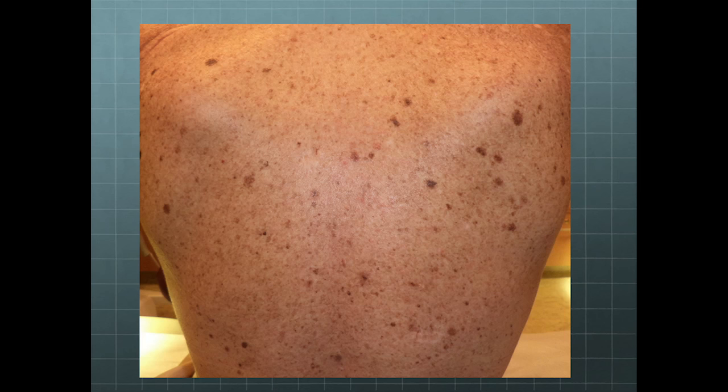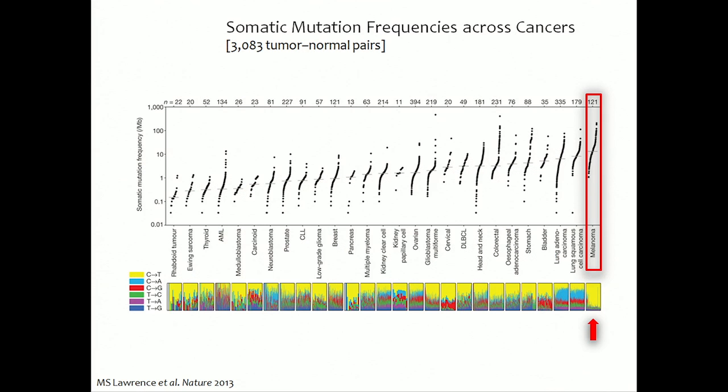If you have a major germline mutation where the genes coding for these critical repair proteins are non-functional, you keep adding UV damage on top of another. This is a patient of mine — an adult, 50 years old, who likes the sun and goes to Florida to lay out. These are some of the nevi he has. You don't have to have XP to give this kind of phenotype.